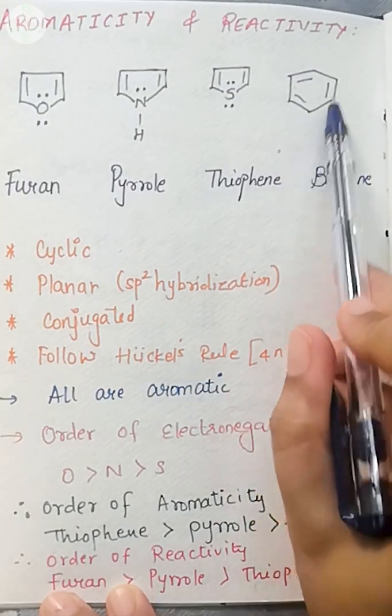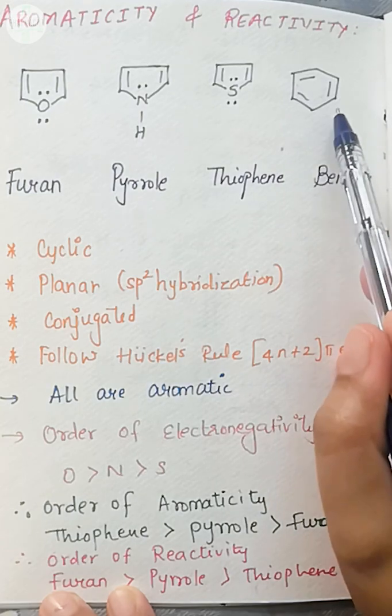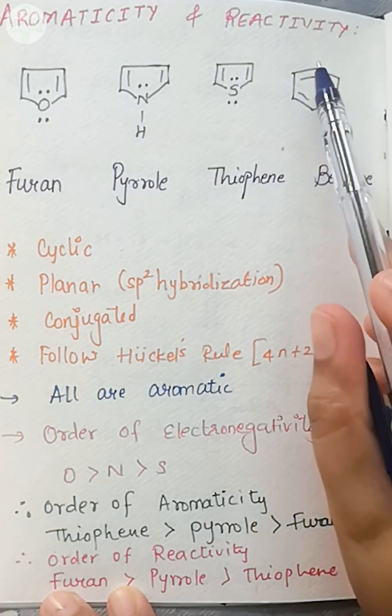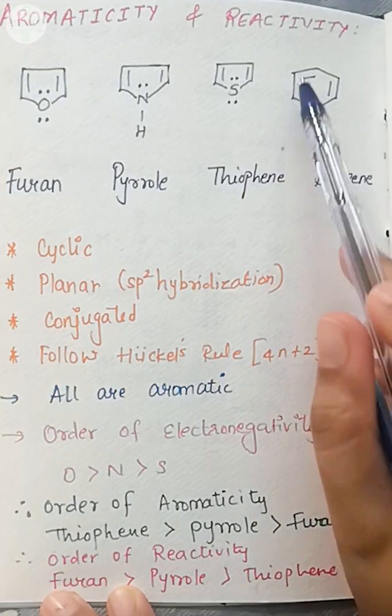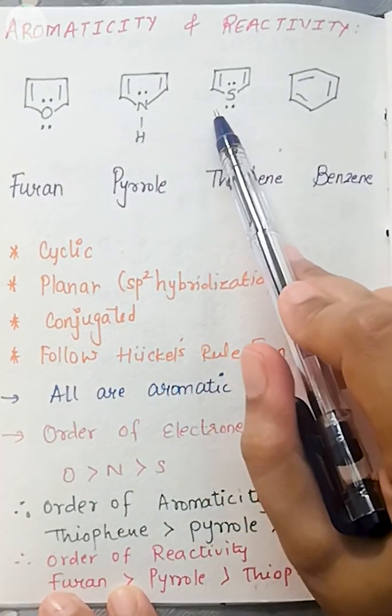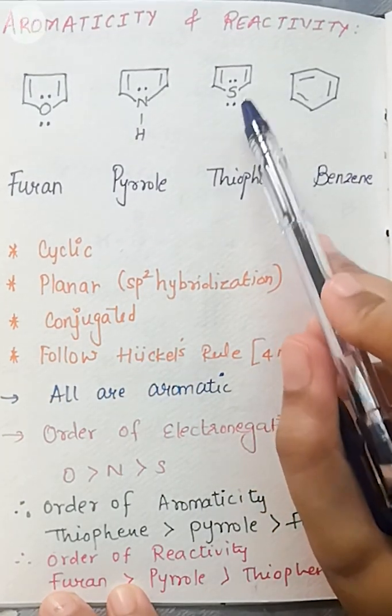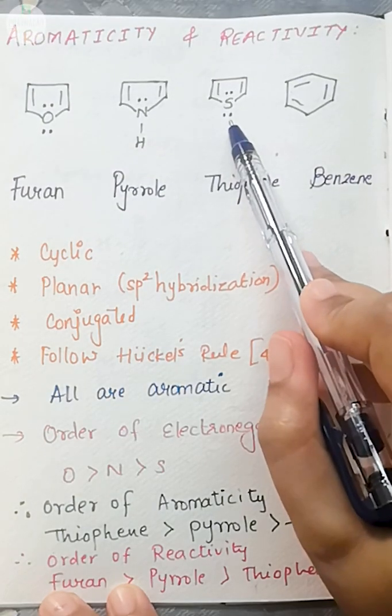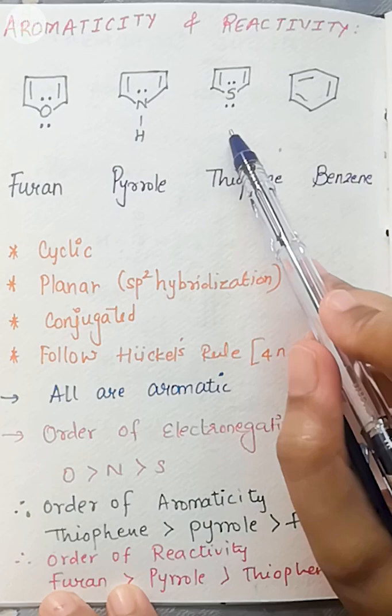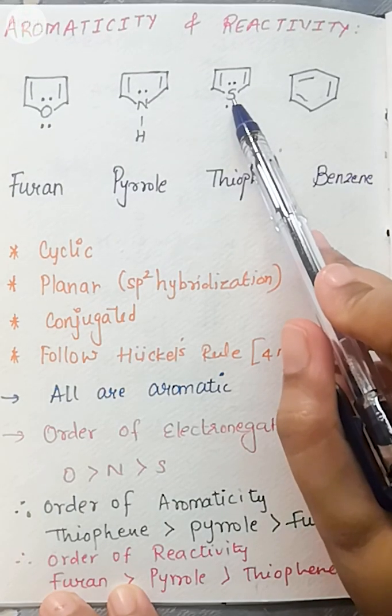Now look at benzene. In benzene, there is a carbon atom in every corner and there is a double bond present. So every carbon is sp2 hybridized. Similarly, if you can see these three molecules here, there are two single bonds on sulfur. Now there is one lone pair here which will participate in the formation. There will be three bonds and one lone pair. This means this is sp2 hybridized.